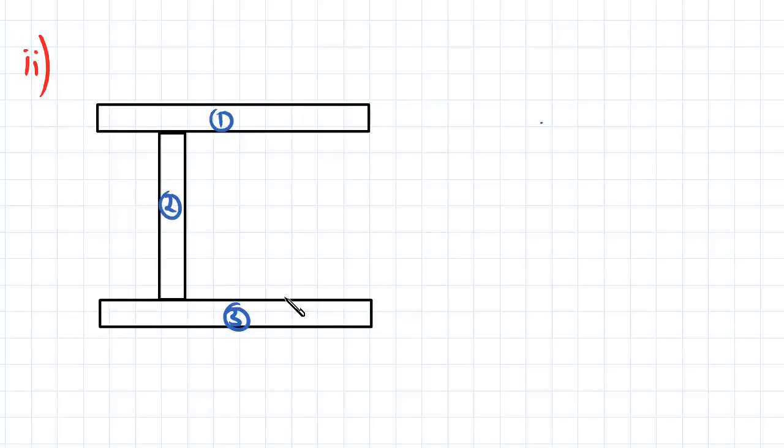To do that, we're first going to need to work out what the second moment of area is for our entire section, because q, which is the shear flow, is equal to the shear force multiplied by the first moment of area divided by the second moment of area. So we need the entire second moment of area for our section.